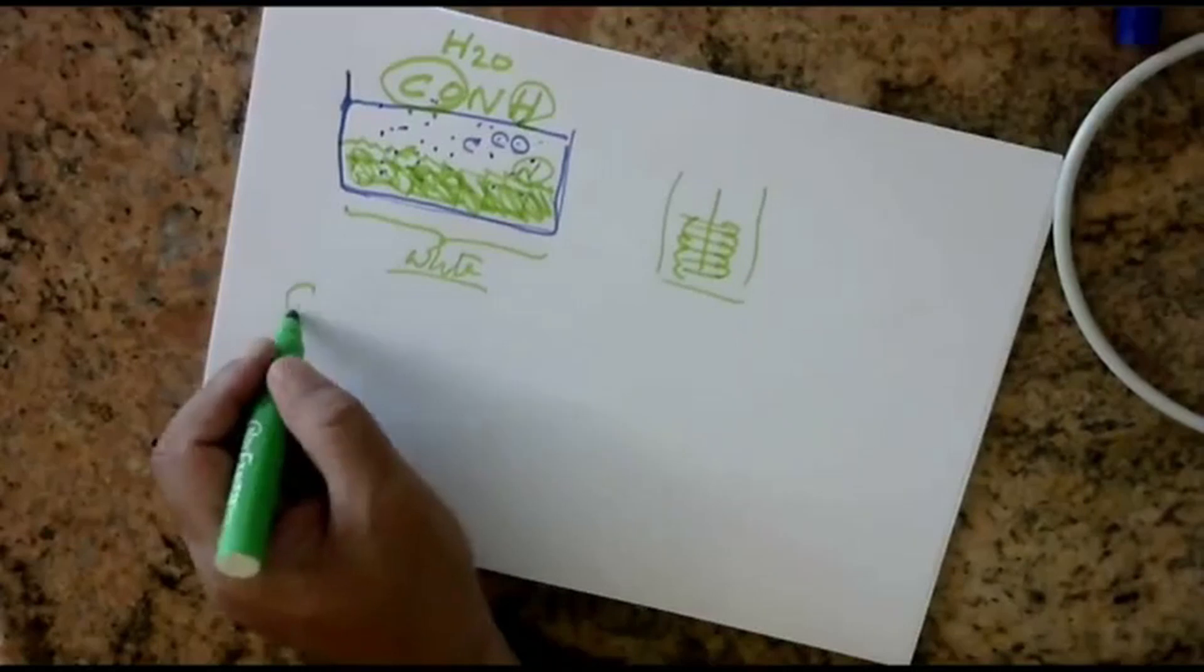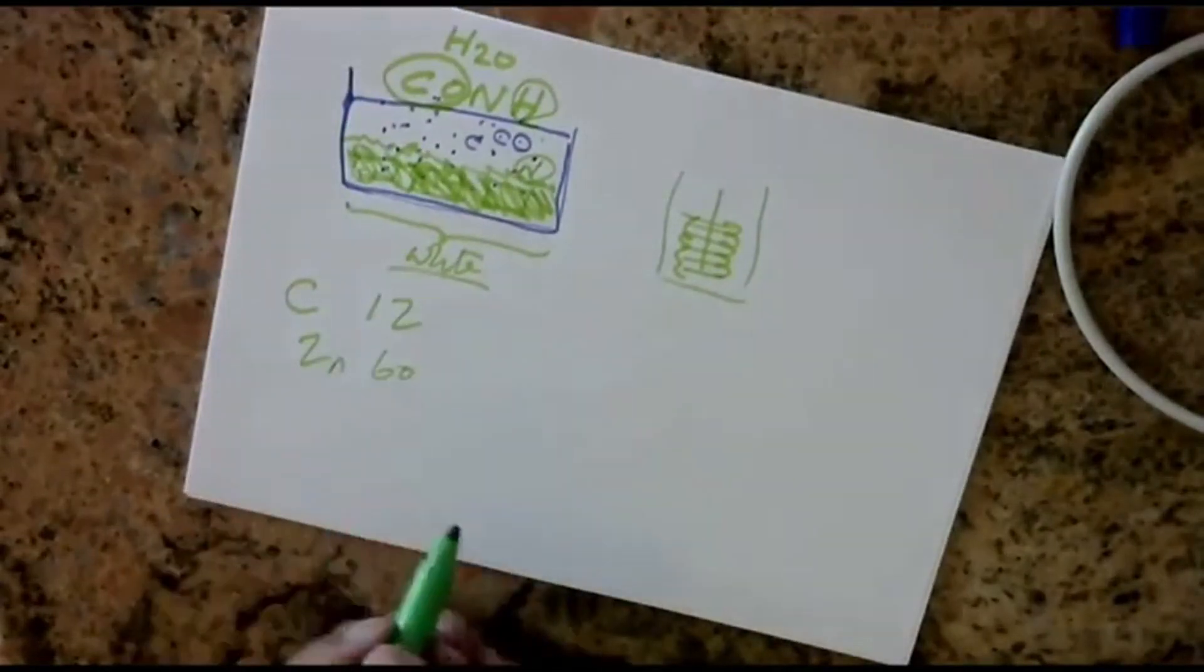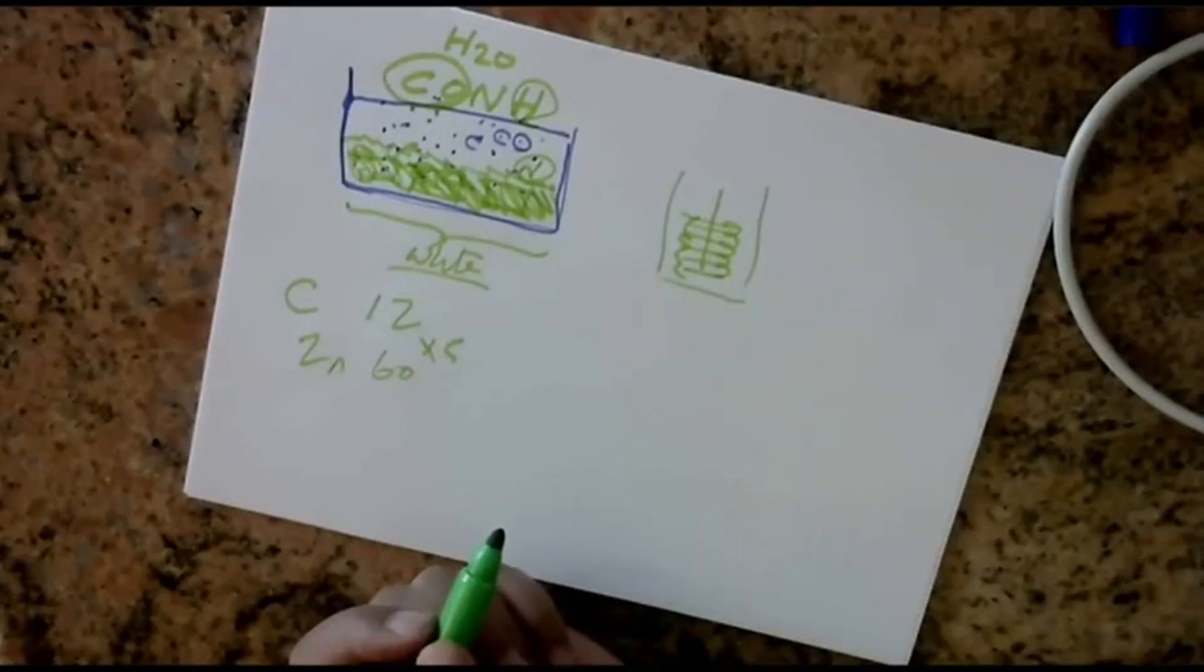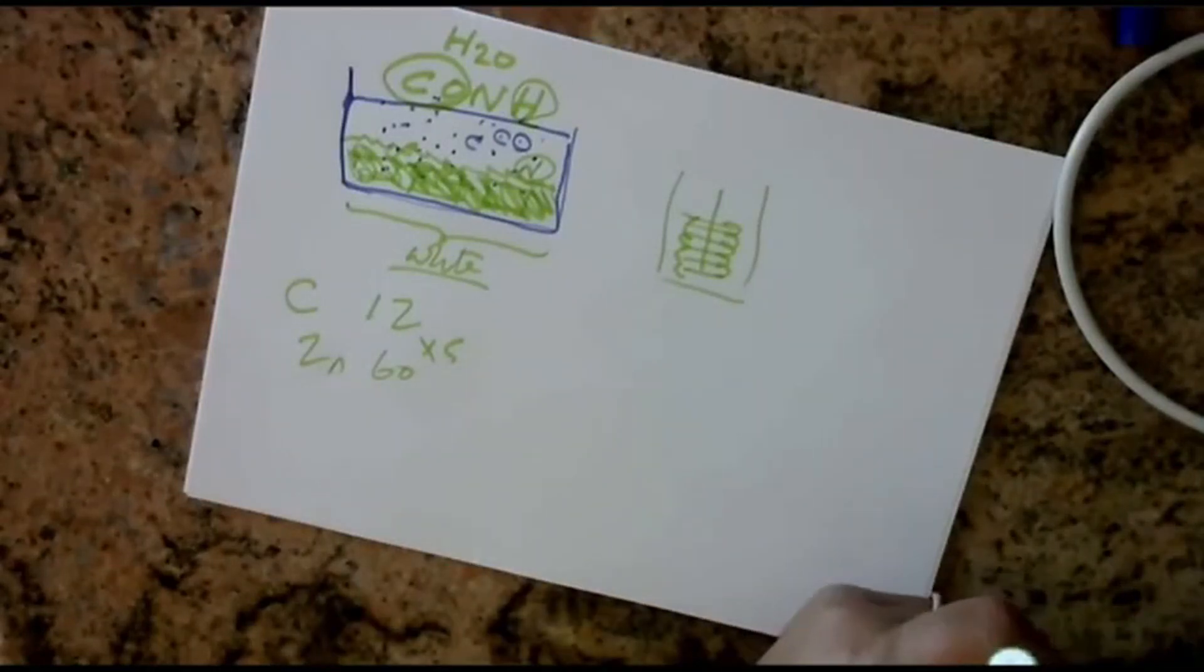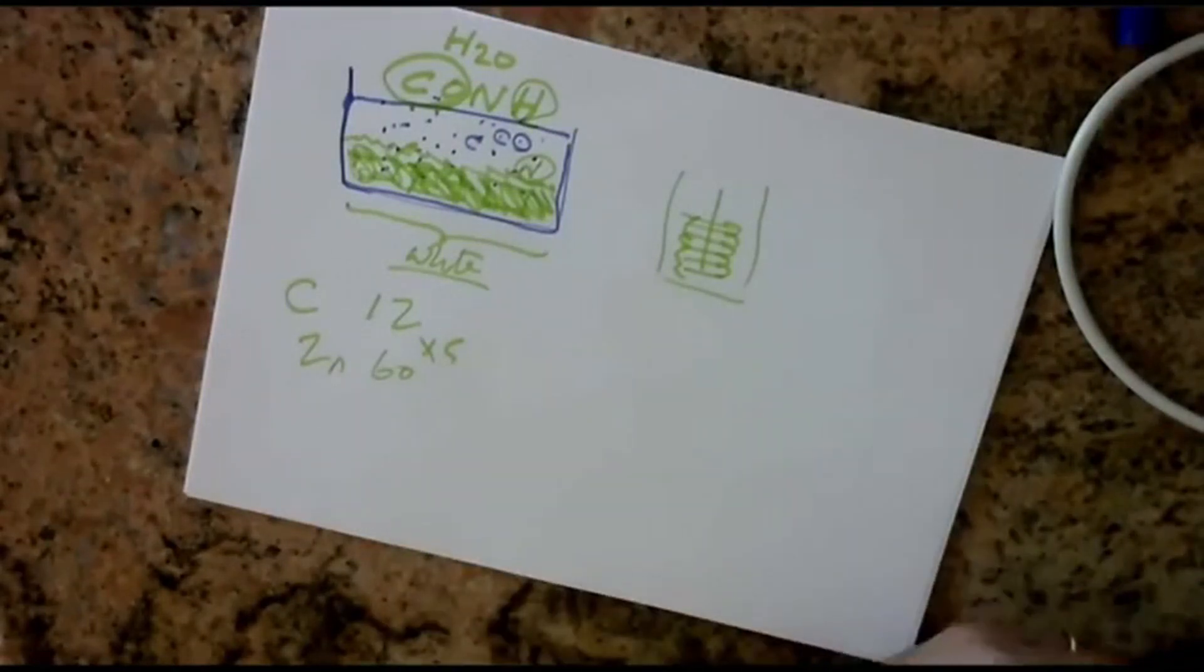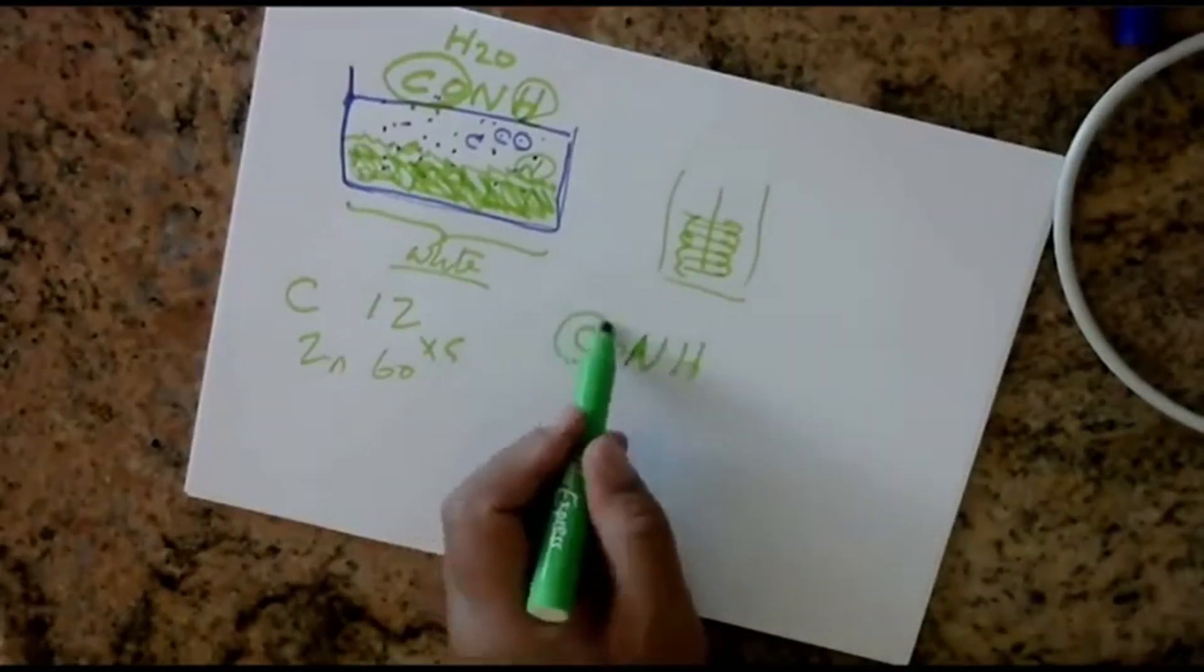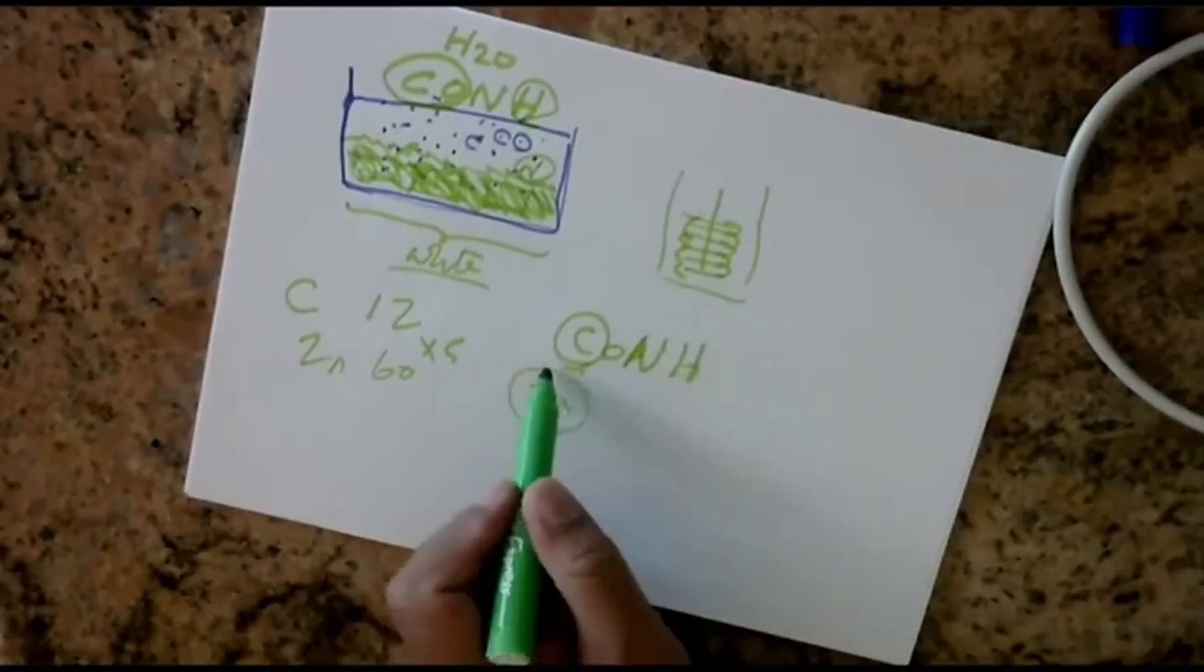Because again, carbon is 12, zinc is 60. That's why human race, the structure of the life on this planet, is very much dependent on the operation of the zinc. Because in part of the structure of the amino acid, zinc behaves very much as a stronger carbon.